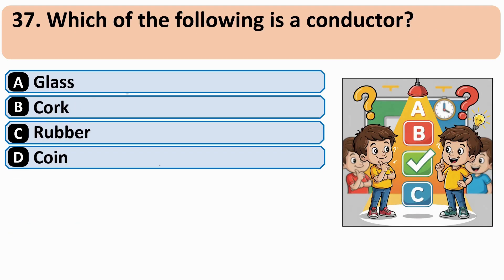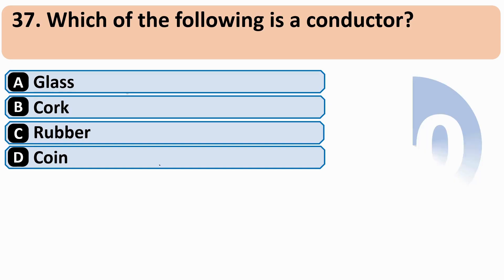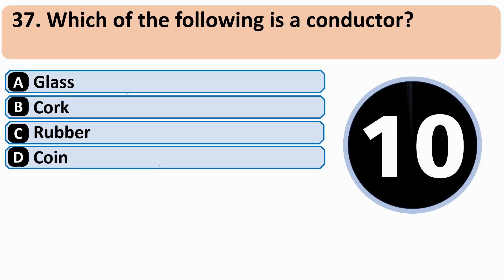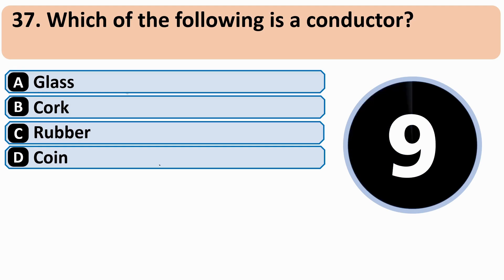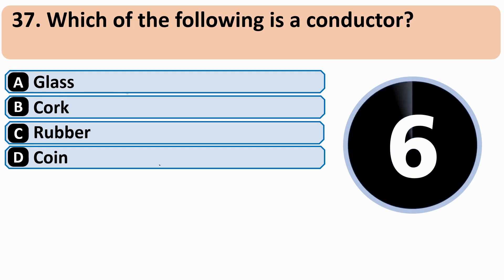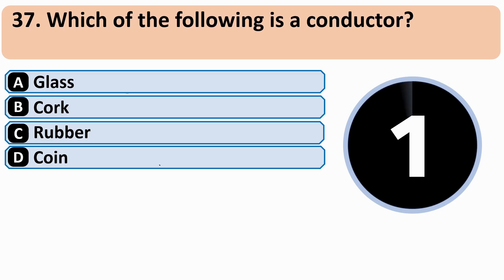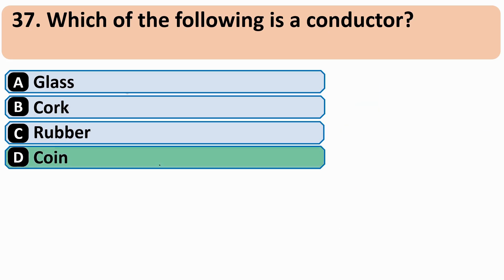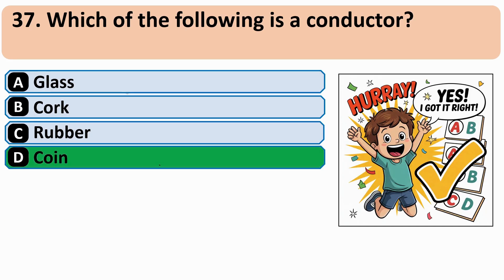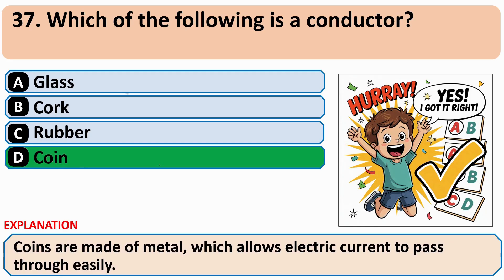Which of the following is a conductor? The correct answer is D: Coin.